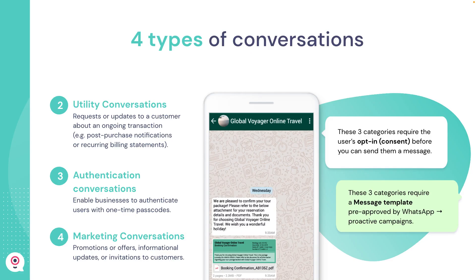Except for service conversations, you need to get an opt-in subscription before you can start having utility, authentication, and marketing conversations with users. These three categories of conversations require a message template previously approved by WhatsApp.